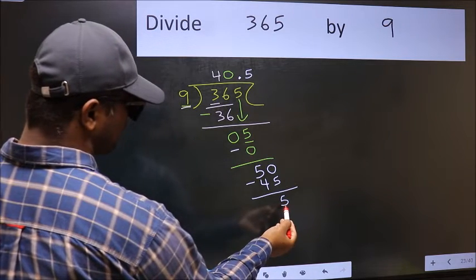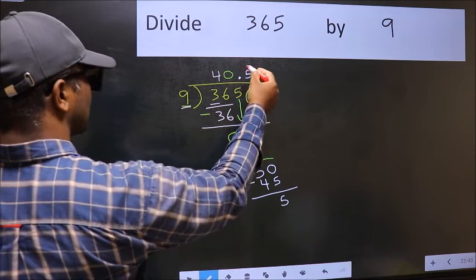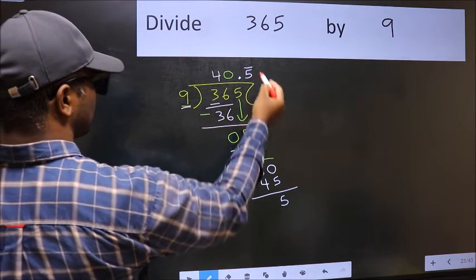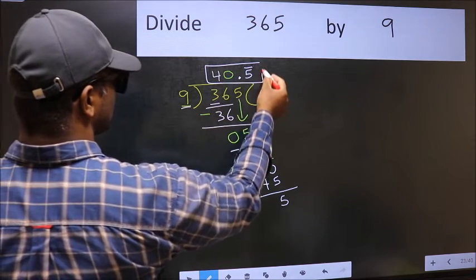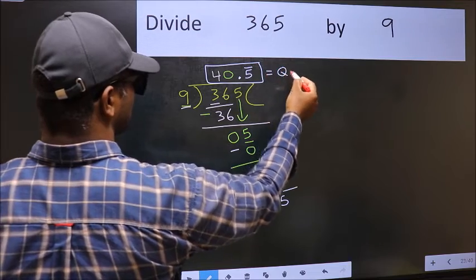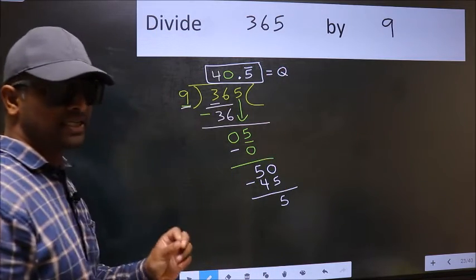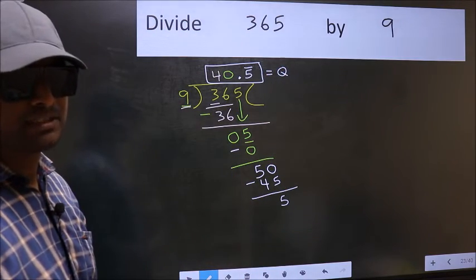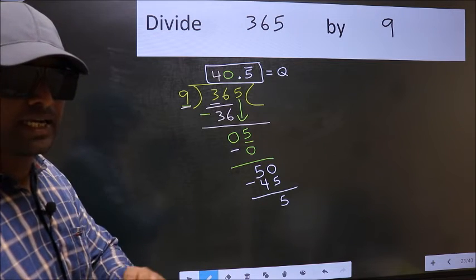Now you should subtract. We get 5. We got 5 again, that means we get a bar on this number. So this is our quotient. Did you understand where the mistake happens? You should not make that mistake.